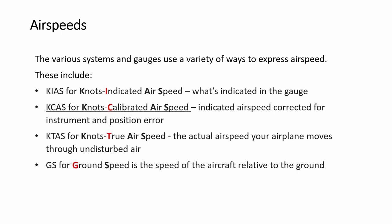Starting with airspeeds — sometimes it can be confusing because there are different kinds used and displayed. KIAS means indicated airspeed — basically what you see in the gauge. KCAS, calibrated, will correct for instrument errors and position error. Then KTAS is true airspeed, and there is also ground speed. Calibrated airspeed is what is usually used.